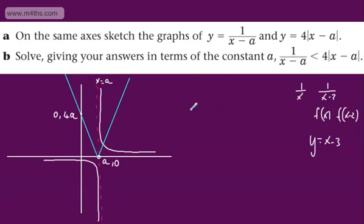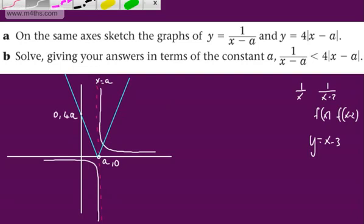Let's think about what this is saying — when is the green graph of 4|x - a| above the line 1/(x - a)? It's going to be above anywhere to the left of the asymptote. We can split this up into two regions. To the left of the asymptote, the modulus function is always greater than the reciprocal. To the right, there's a point of intersection we need to find.